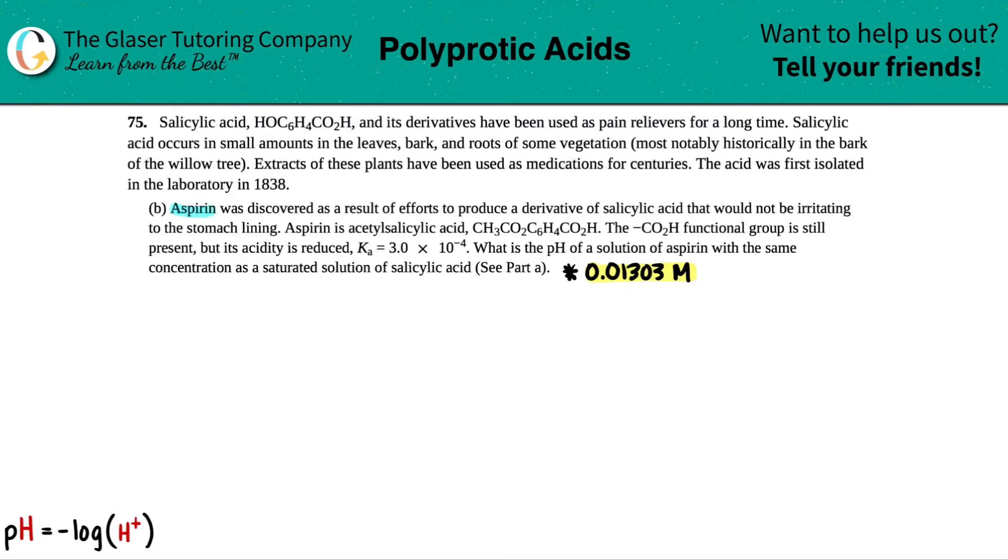Letter B. Aspirin was discovered as a result of efforts to produce a derivative of salicylic acid that would not be irritating to the stomach lining. Aspirin is acetylsalicylic acid, CH3CO2C6H4CO2H. The CO2H functional group is still present, but its acidity is reduced. The Ka value is only 3.0 times 10 to the negative fourth. What is the pH of a solution of aspirin with the same concentration as a saturated solution of salicylic acid?